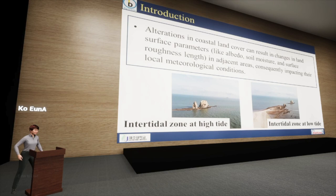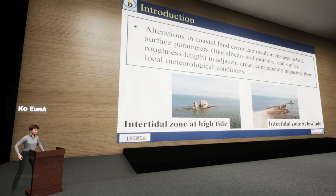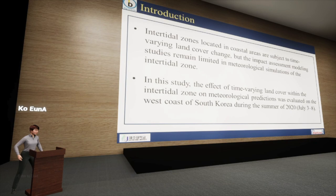In particular, coastal intertidal areas are experiencing land cover changes twice a day. The intertidal zone, which is subject to these land cover changes, plays a critical role in the marine environment and the maintenance of the marine ecosystem. However, meteorological models performed with a fixed land cover limit the ability to accurately simulate meteorology in the intertidal zone.